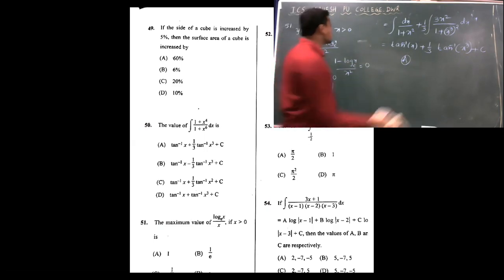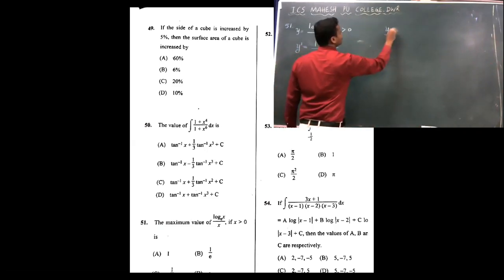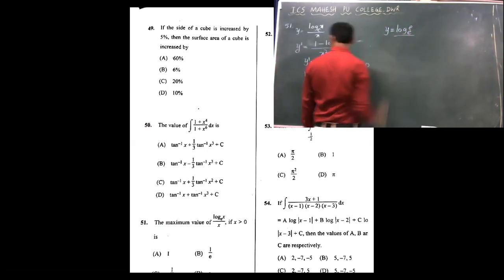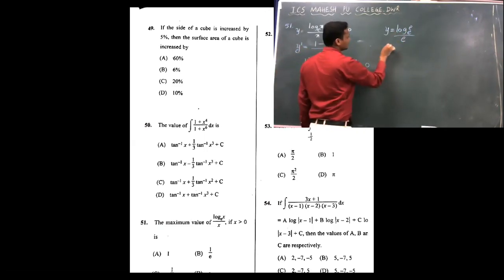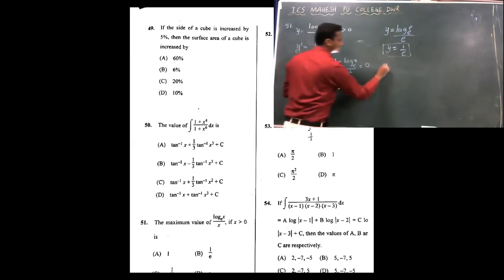So if x equals e, substitute it in the y value. You get y equals log base e of e, upon e. Log base e of e equals 1, therefore the maximum value is 1/e. So 1/e is the correct answer, therefore option B is correct.